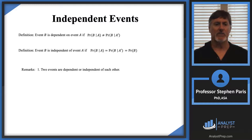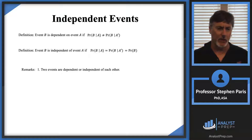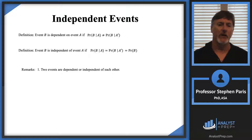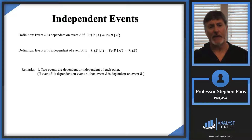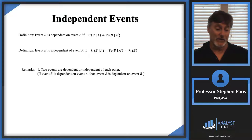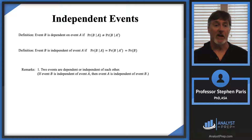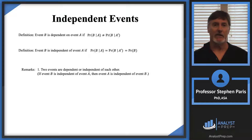So let's look at some remarks. This may be clear to you already, but two events are either dependent or independent of each other. What I mean is, if event B is dependent on event A, then event A is dependent on event B — there's this relationship going back and forth. Likewise, if event B is independent of event A, then event A is going to be independent of event B.